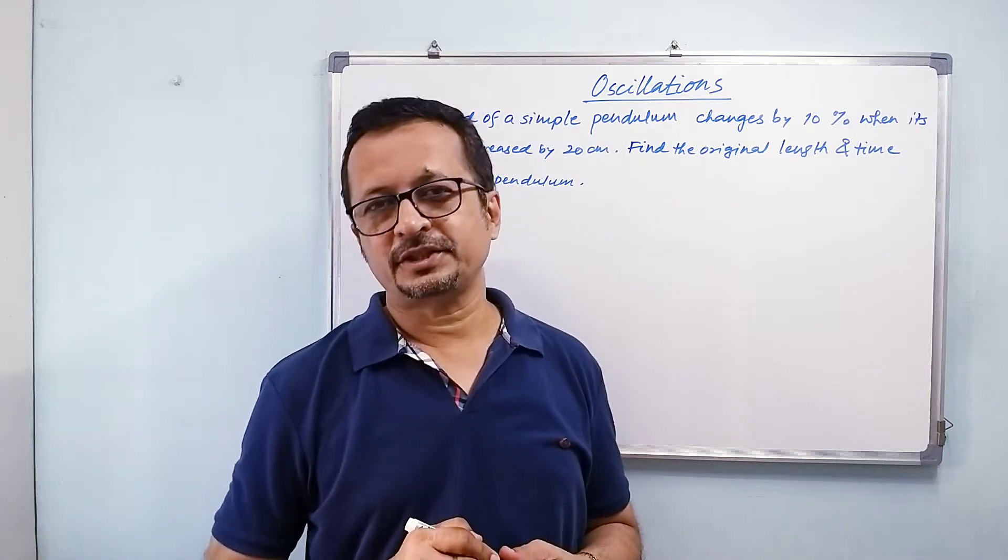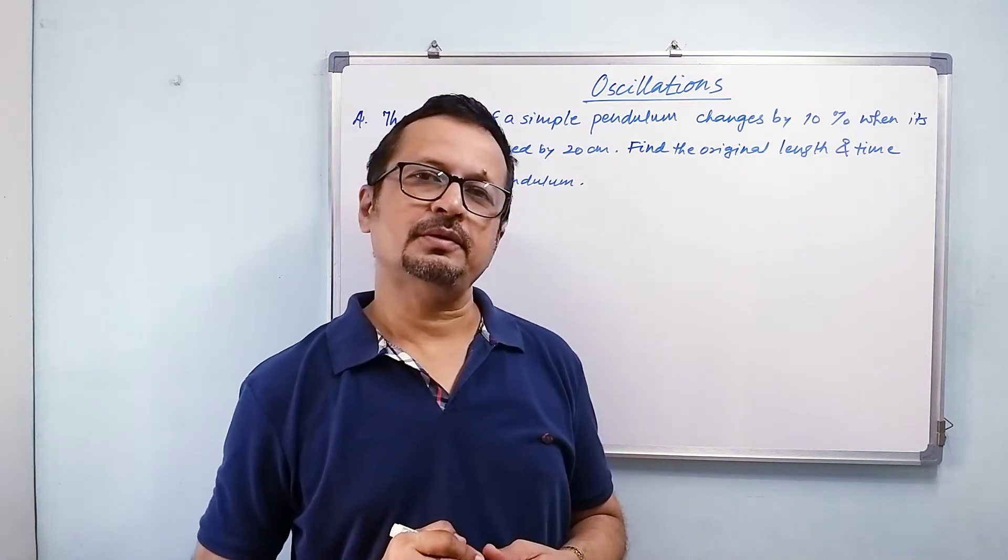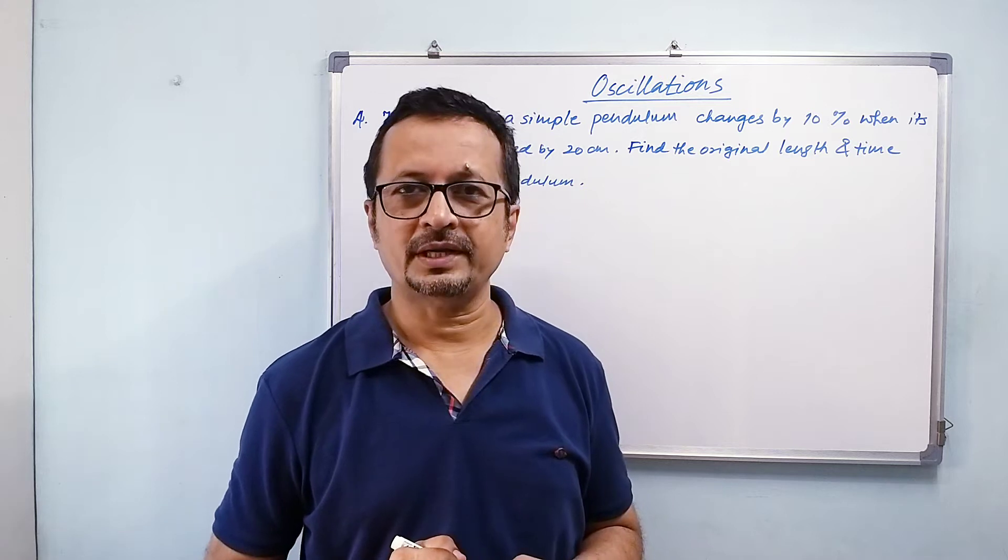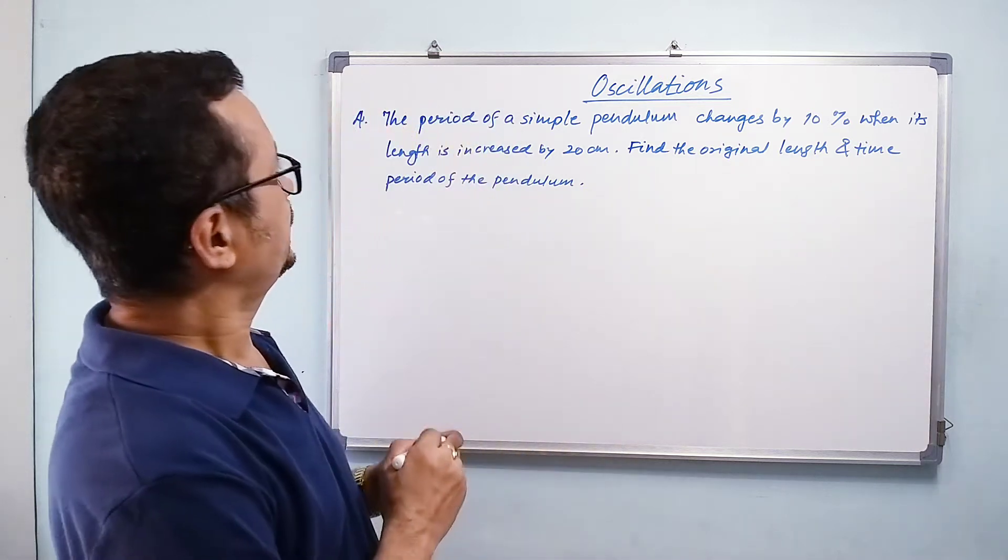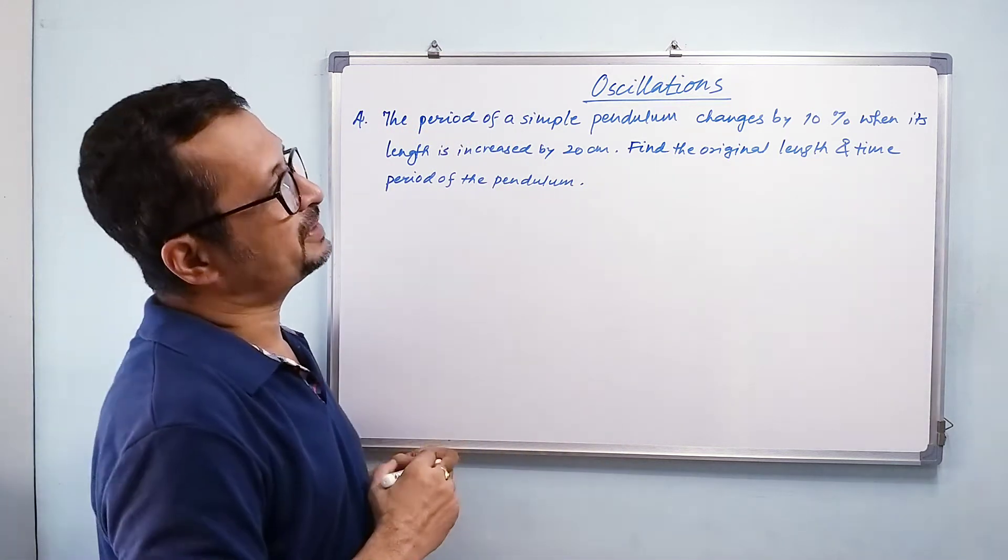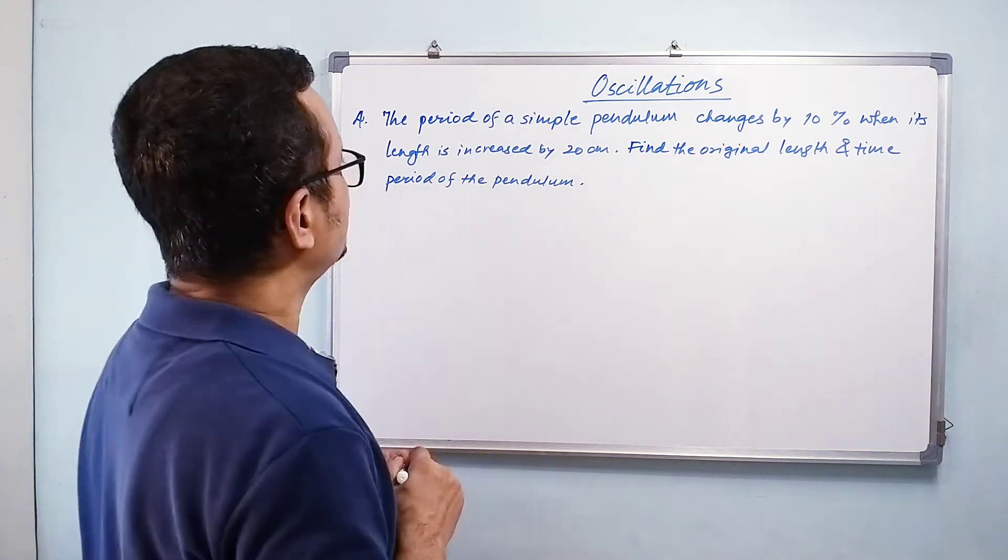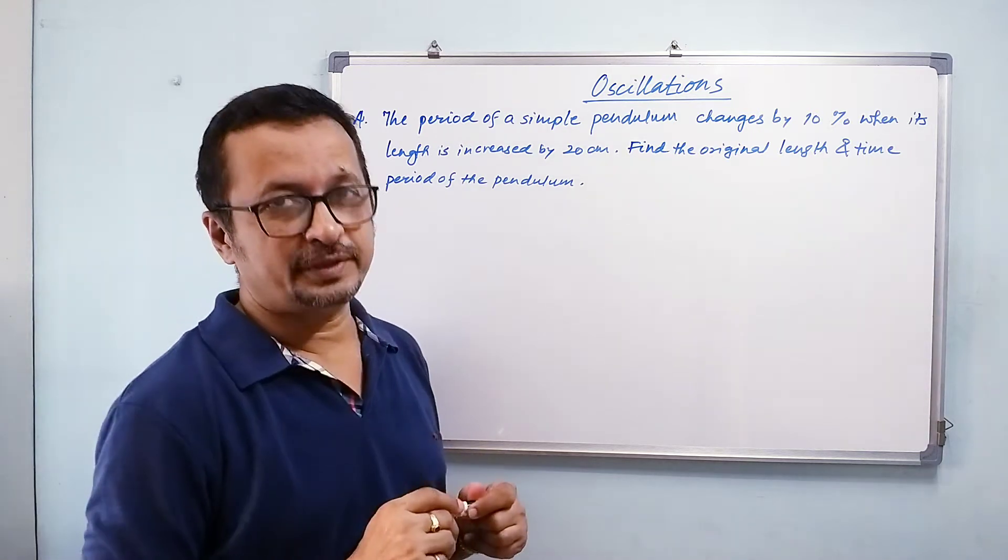Hello friends, over to the next problem. This problem is on simple pendulum. Let us see what is asked. The period of a simple pendulum changes by 10% when its length is increased by 20 centimeters.